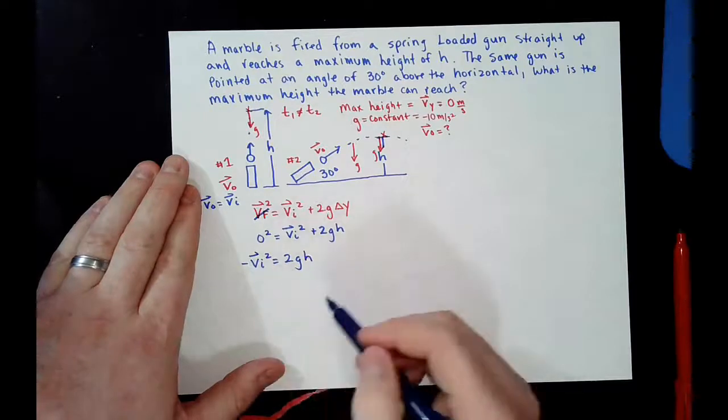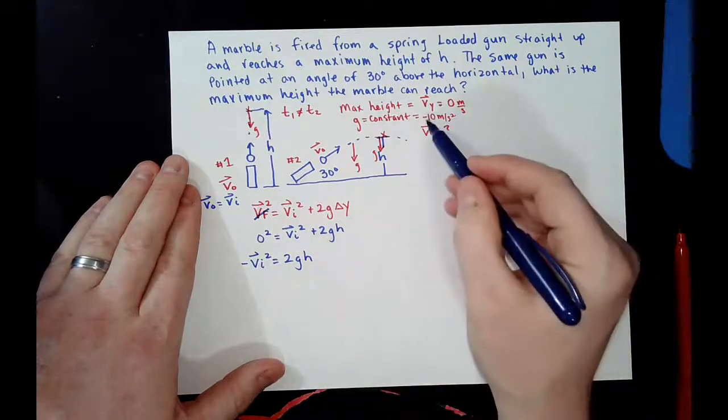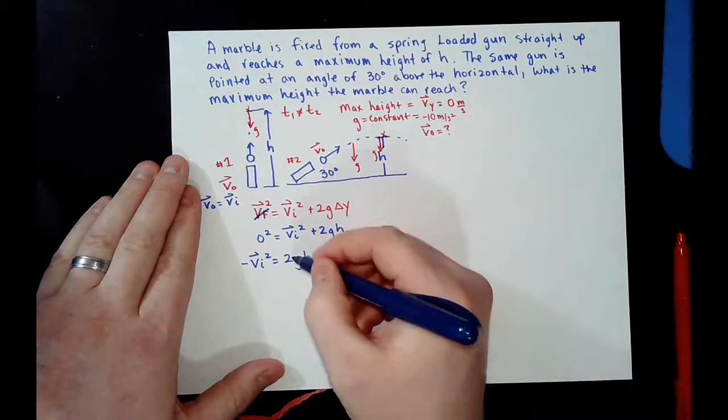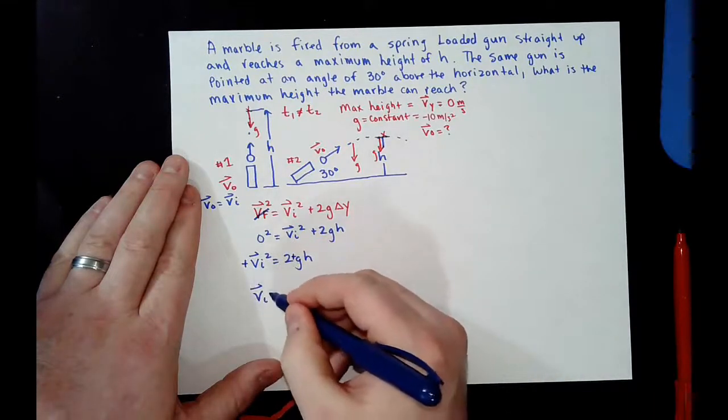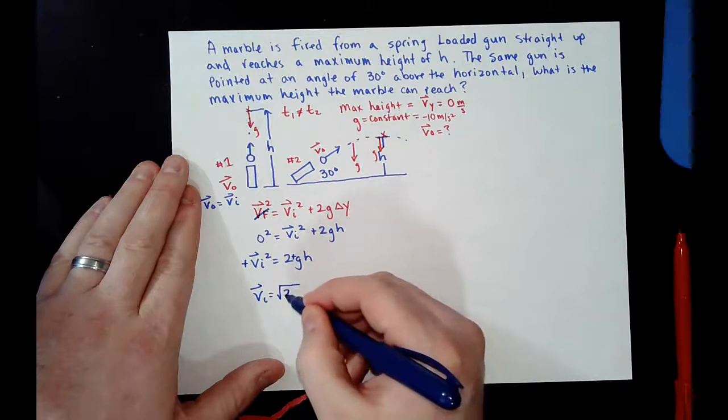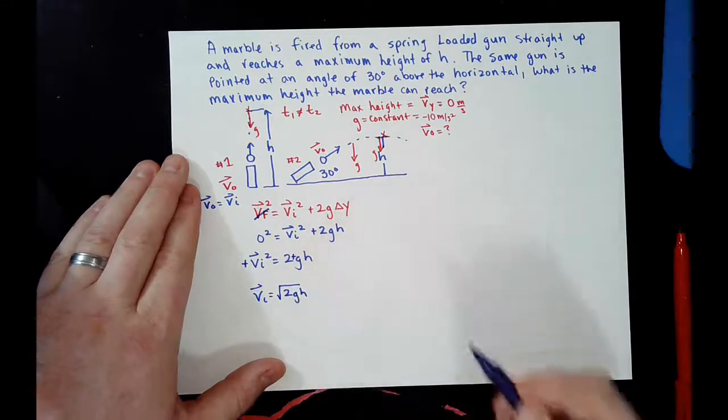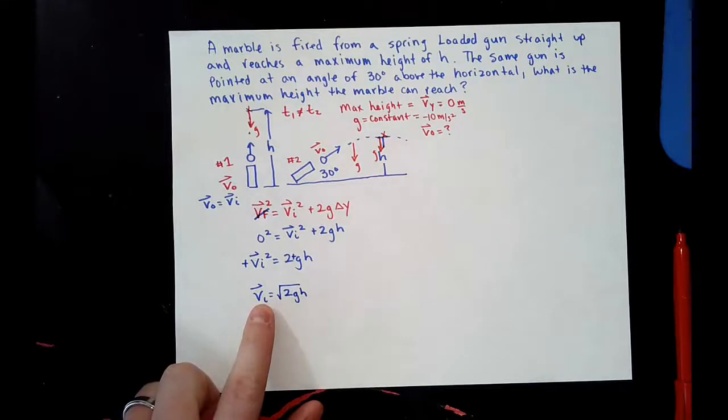This negative way because the gravitational constant is actually negative. So again, this cancels out. So, the velocity initial will be equal to the square root of 2gh. So that is how fast our gun will shoot.